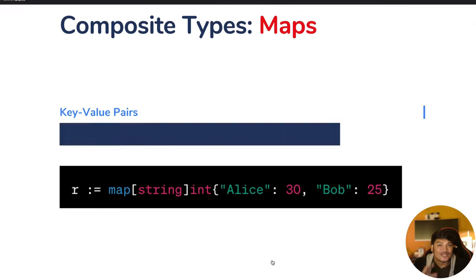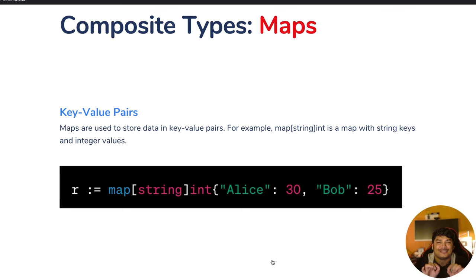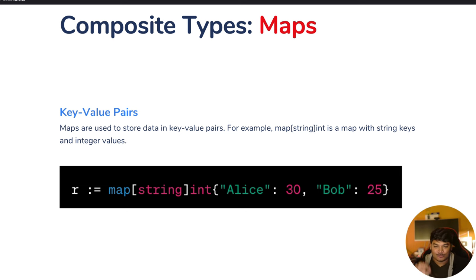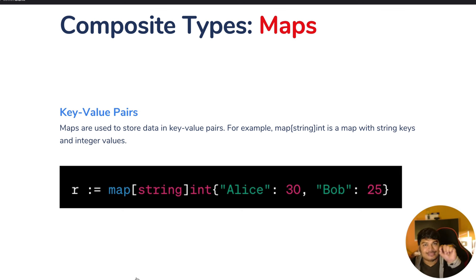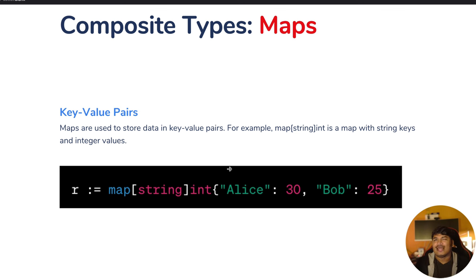Now let's learn about maps, which store data in key-value pairs. For example, 'map[string]int' is a map with string keys and integer values. In the example, 'r := map[string]int{"Alice": 30, "Bob": 25}' — Alice is the key with value 30, Bob is the key with value 25. To access values, use r["Alice"] or r["Bob"].